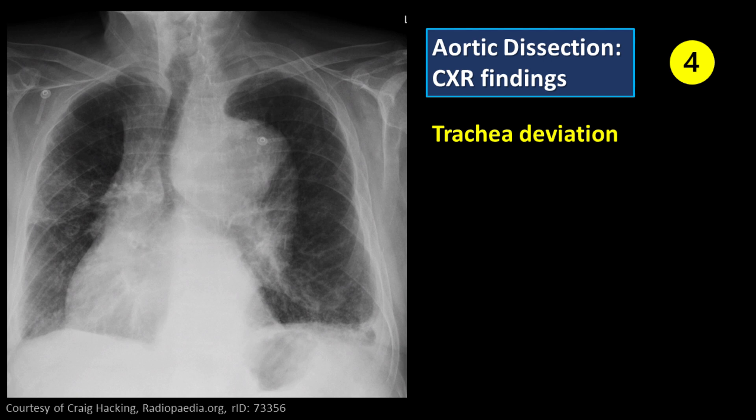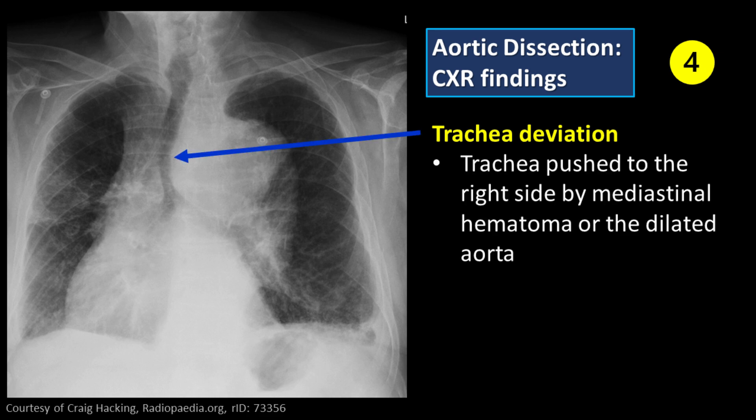Feature number 4: Tracheal deviation. The trachea may be pushed to the right side by mediastinal hematoma or the dilated aorta.